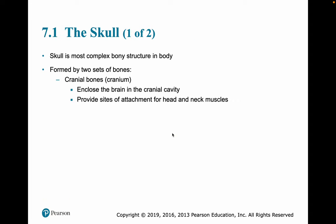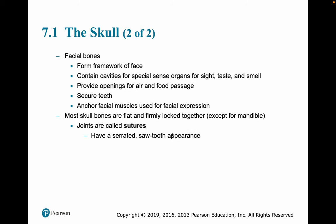The skull is the most complex bony structure in the body and will be the biggest part of this chapter. It's made up of two sets of bones: the cranium bones, which enclose the brain and cranial cavity and provide sites of attachment for head and neck muscles; and the facial bones, which form the framework of the face. They contain cavities for special sense organs — sight, taste, smell — and provide openings for air and food passages, hold our teeth in place, and anchor our facial muscles for facial expressions. Most skull bones are flat bones firmly locked together; the exception is the mandible. The joints are called sutures and have a serrated, sawtooth appearance.